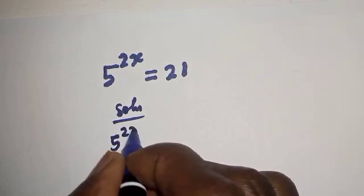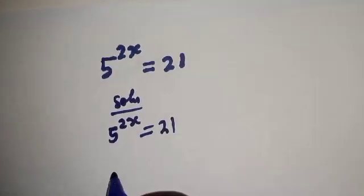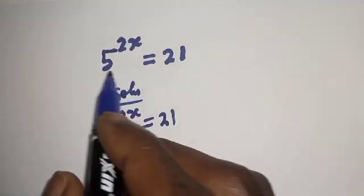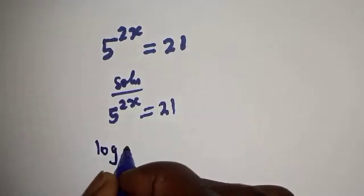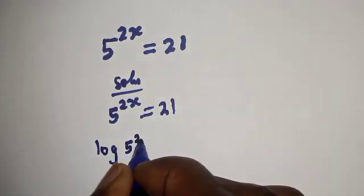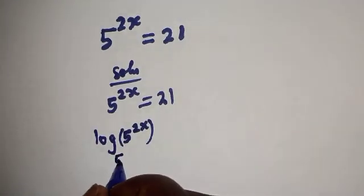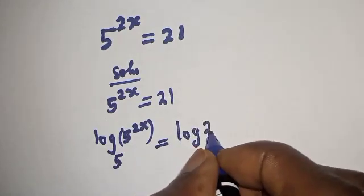Solution: 5 raised to power 2x is equal to 21. Let's take the log of both sides and make use of this base 5. We have log of 5 raised to power 2x base 5 is equal to log 21 base 5.